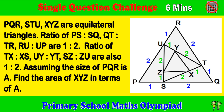PQR, STU, XYZ are equilateral triangles. Ratio of PS to SQ, QT to TR, RU to UP are 1 to 2. Ratio of TX to XS, UY to YT, SZ to ZU are also 1 to 2. Assuming the size of PQR is A, find the area of XYZ in terms of A.